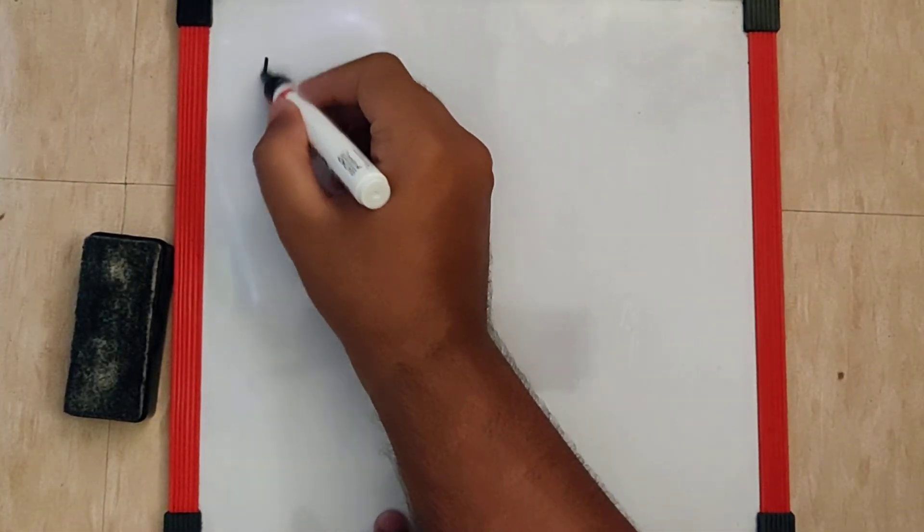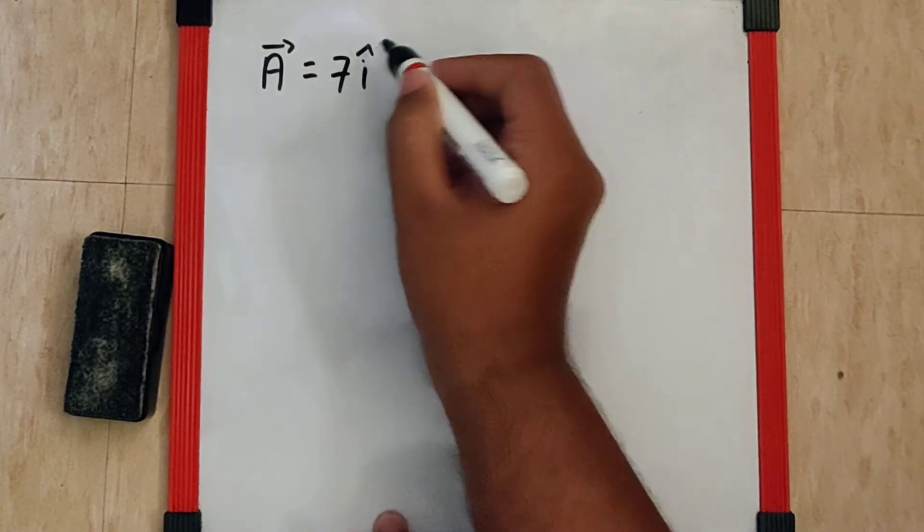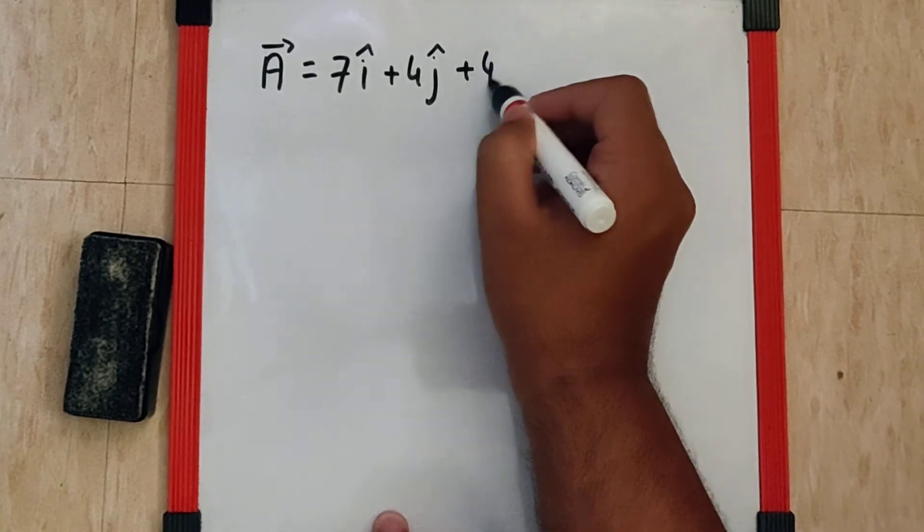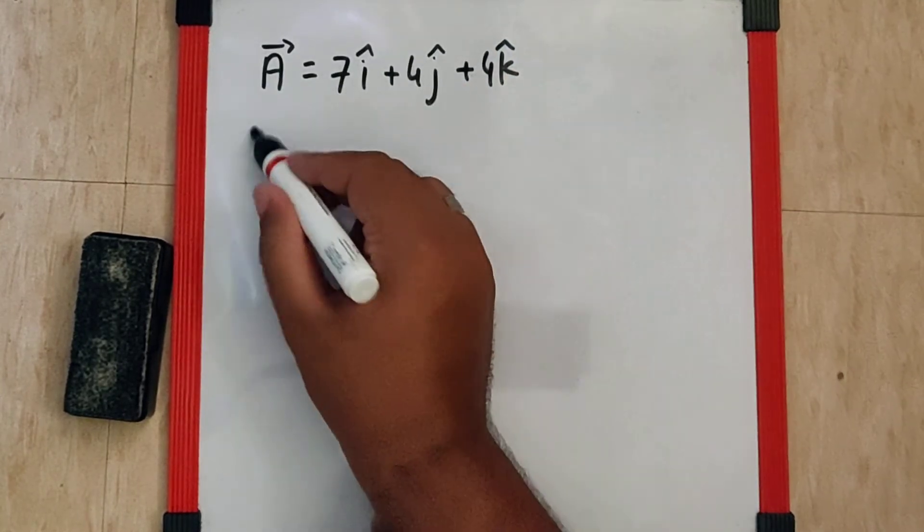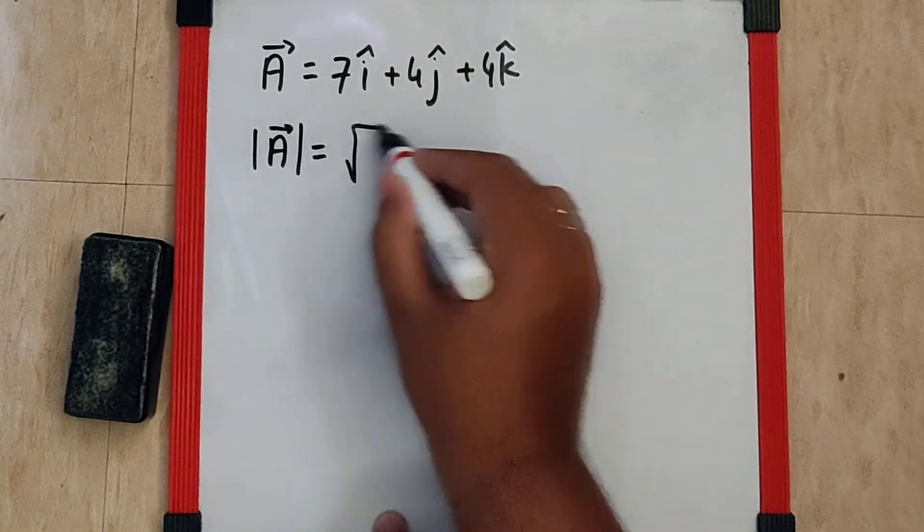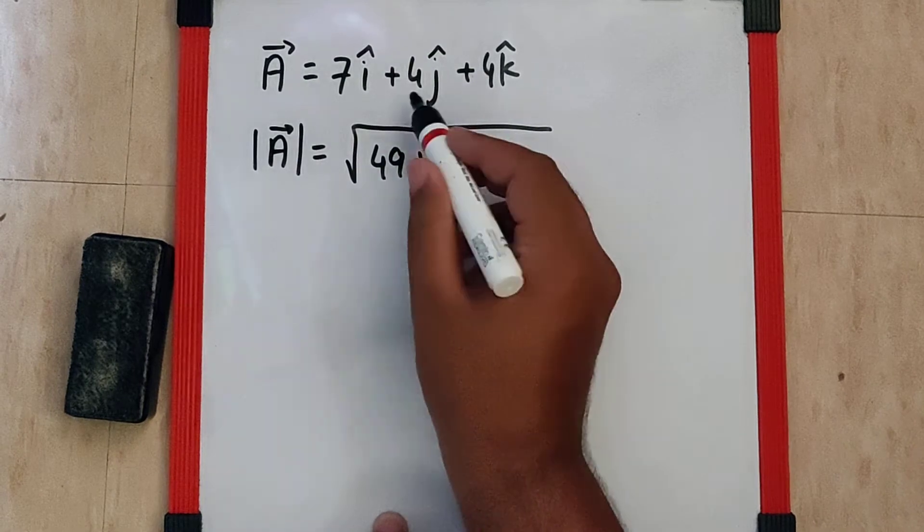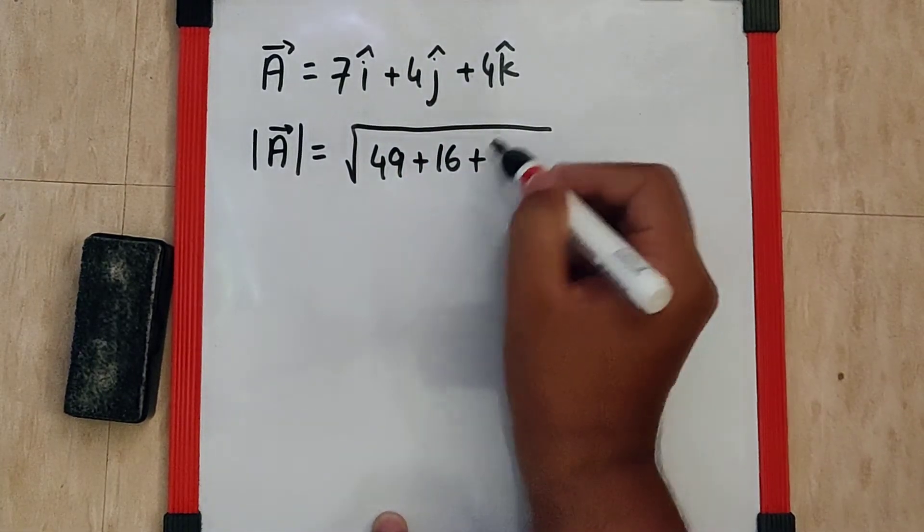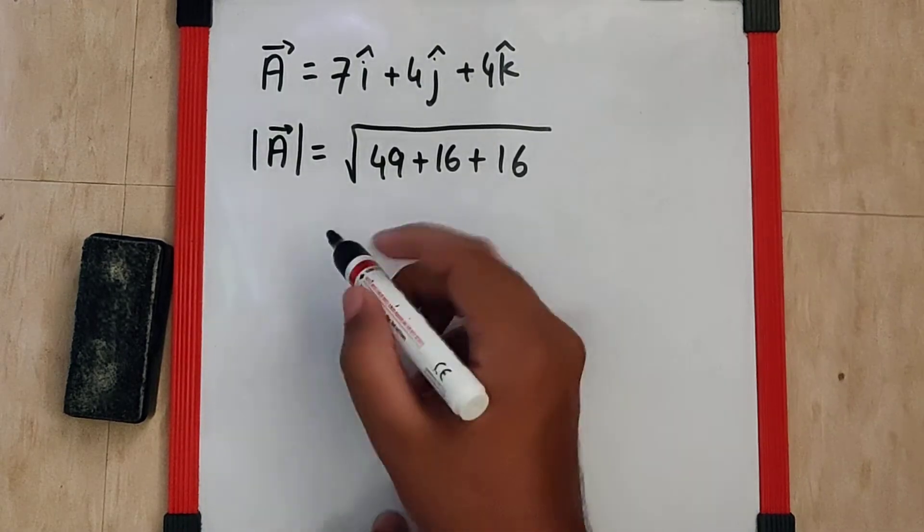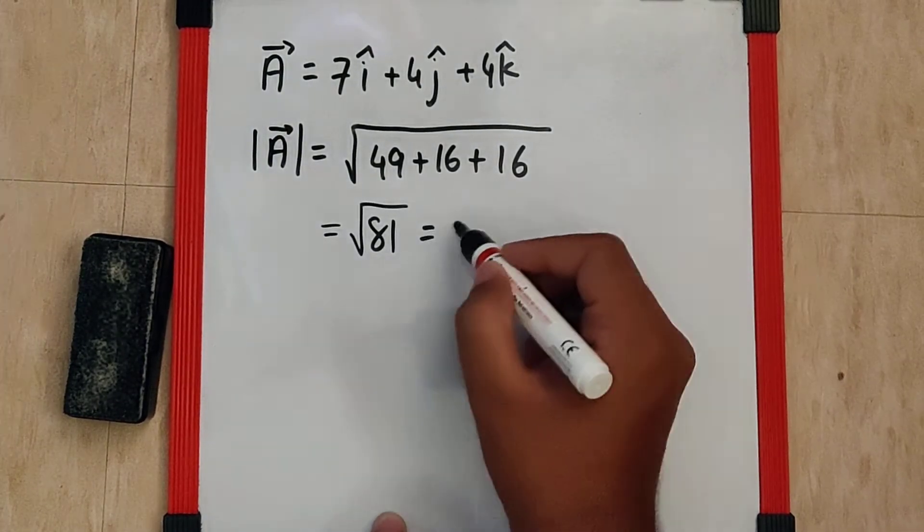So the vector given over here is 7i cap plus 4j cap plus 4k cap. The magnitude of that vector A is going to be root of square of 7 which is 49, square of 4 which is 16, square of 4 again which is 16. So the total is going to be root of 81 which is 9.